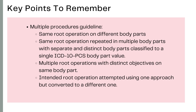Multiple procedures are coded in several scenarios. First, when the same root operation is performed on different body parts as defined by distinct values of the body part character. Second, when the same root operation is repeated on multiple separate and distinct body parts. Third, when multiple root operations with distinct objectives are performed on the same body part — since the root operation changes for each goal, each procedure is coded separately.